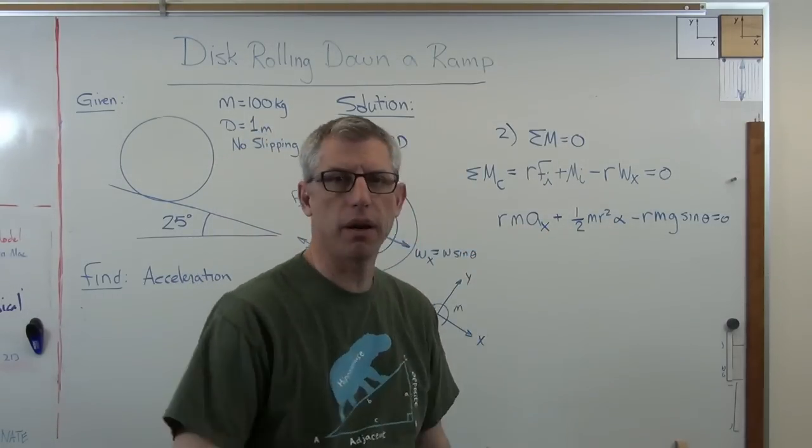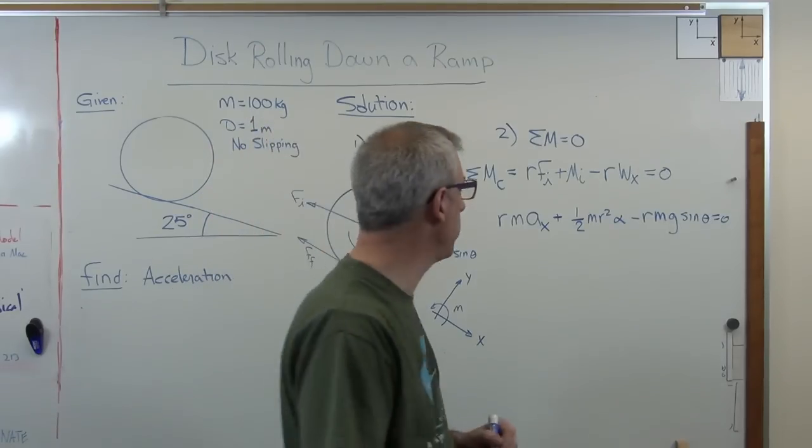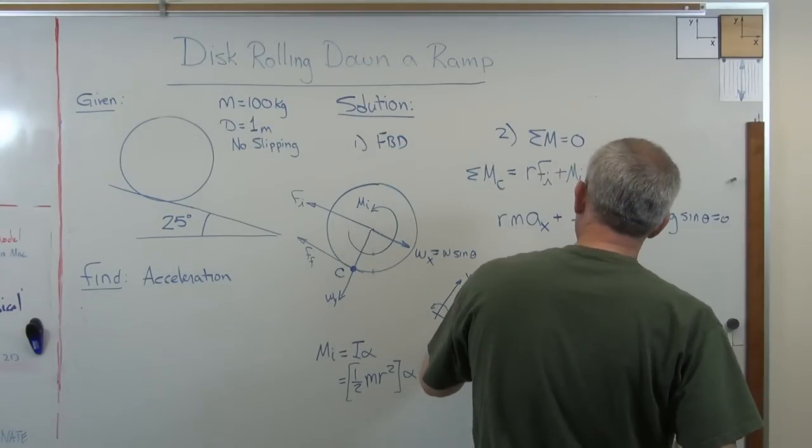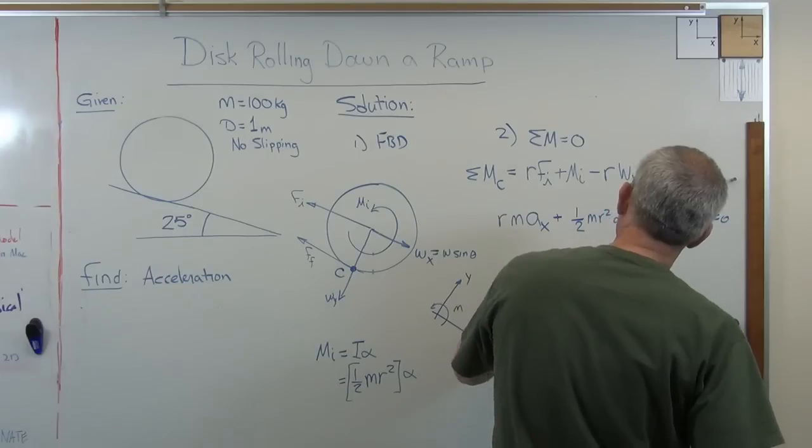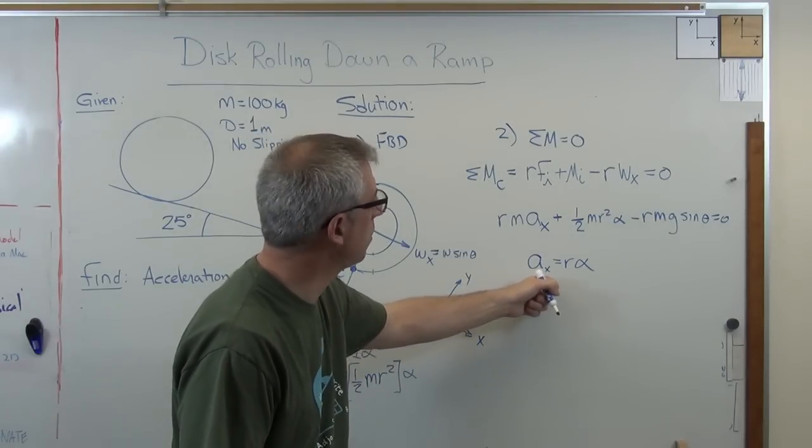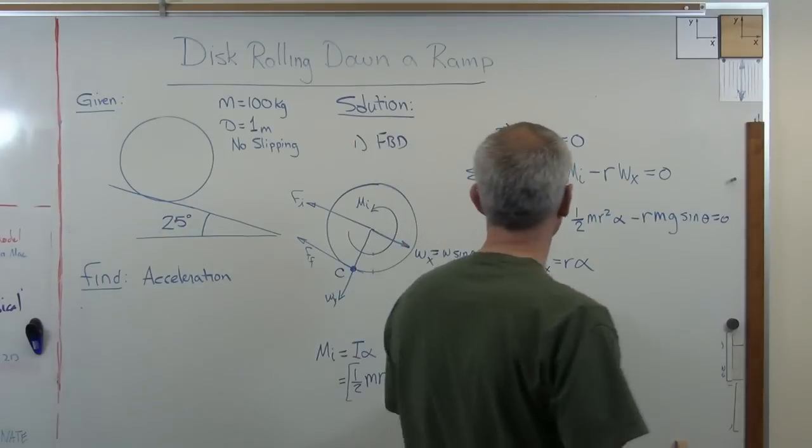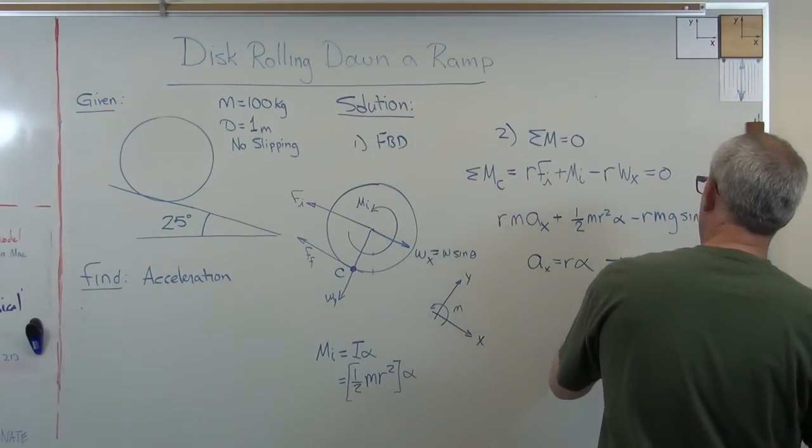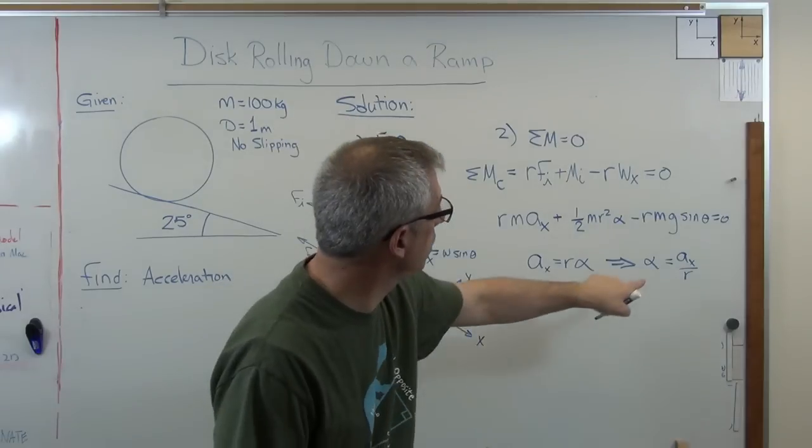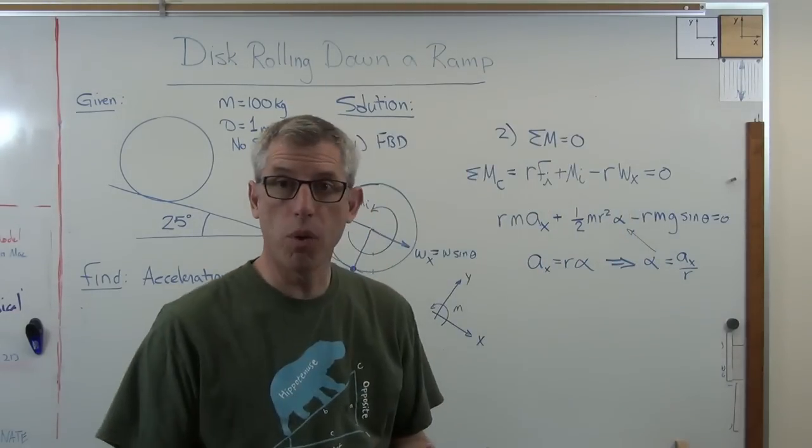So far so good. But there's one problem here. A sub X there and alpha there. I've got two unknowns and one equation. I need another equation. Well, here's the other equation. I know that the acceleration in the X direction equals R alpha. That's straight out of the conversion between polar coordinates and rectangular coordinates. So we get from there alpha equals A sub X over R. All I got to do now is substitute this into there. And I'll have one equation with one unknown.